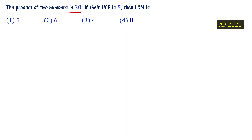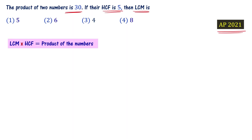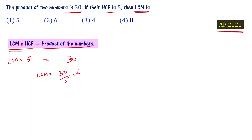Problem: The product of two numbers is 30. If their HCF is 5, then what is the value of LCM? This is the AP policy question of 2021. Using the formula: LCM × HCF = product of the numbers. The product is 30 and HCF is 5. So LCM × 5 = 30, therefore LCM = 30 ÷ 5 = 6. Choice 2 is the right answer.